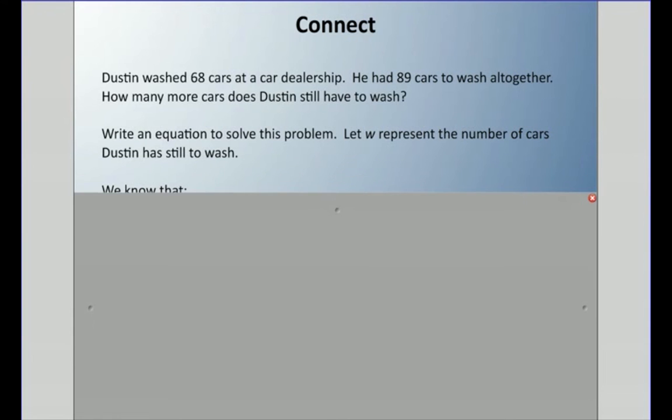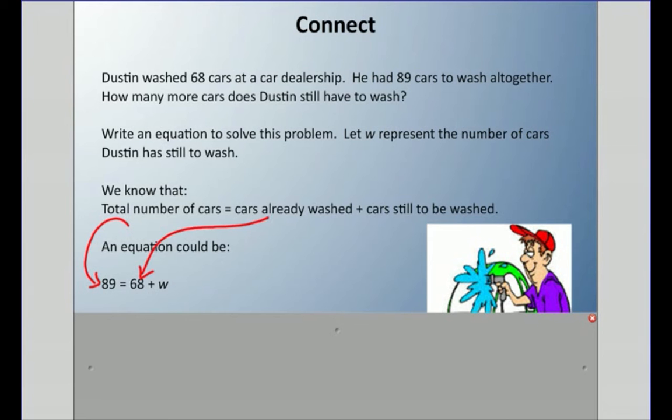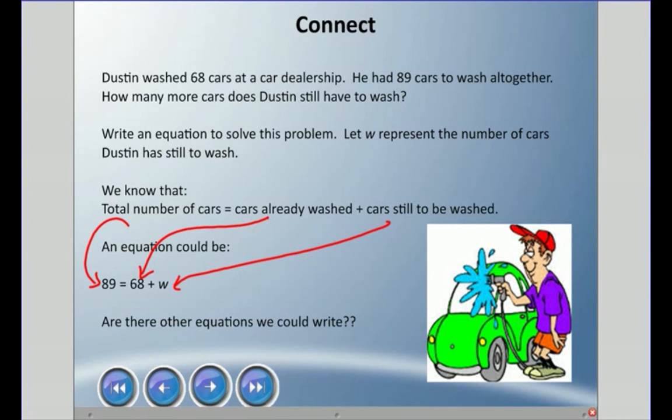We know that there's a total number of cars, and we know there's some cars that he's already washed, and we know that he has to add the cars still to be washed. So an equation could be 89 equals 68 plus w. Please remember the total number of cars was 89, he's already washed 68, and we don't know how many cars still need to be washed. That's what we're trying to find out. Were there any other equations we could have written? Yes, I think there was a few other ones, but we could use this one.